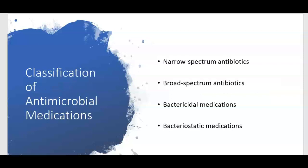A narrow spectrum antibiotic is only sensitive to a few types of bacteria, while a broad spectrum antibiotic is sensitive to a wide variety of bacteria. Antibiotics can also be classified as bactericidal or bacteriostatic. Bactericidal medications are directly lethal to the microorganism. Bacteriostatic medications slow the growth of the microorganism, and then the immune system steps in and finishes off the bacteria. Think of bacteriostatic as slowing bacterial growth to allow the immune system to take over.